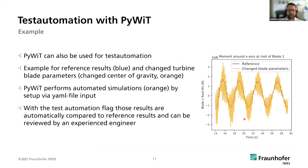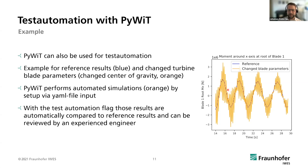Regarding test automation, here is one example. The blue line is the reference result where we know the simulation works fine and gives expected results. For this example, I changed the blade parameter — specifically the center of gravity — and you can see the results look very different. The mean value is quite the same, but the frequency is very high. This is an example automatically created by the test automation, which can be reviewed by an experiment engineer to decide what is wrong in the simulation.